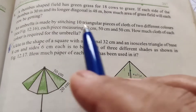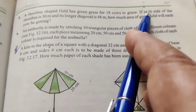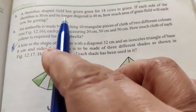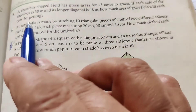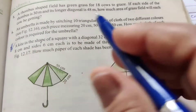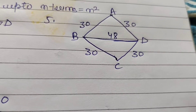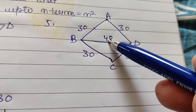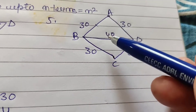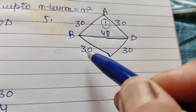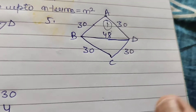Question number 5: A rhombus shaped field has green grass for 18 cows to graze. Each side of the rhombus is 30 meter and its longer diagonal is 48 meter. Find how much area each cow gets. We find the area of triangle ABD and multiply by 2 to get the area of rhombus ABCD.